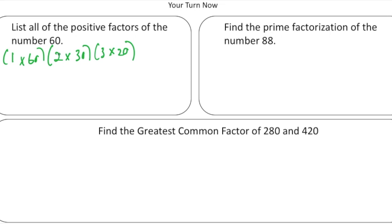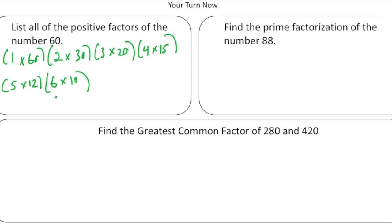I know 4 goes into 60 fifteen times. I know 5 goes into 60 twelve times. And 6 goes into 60 ten times. So altogether we have 12 positive factors of the number 60: 1, 2, 3, 4, 5, 6, 10, 12, 15, 20, 30, and 60.